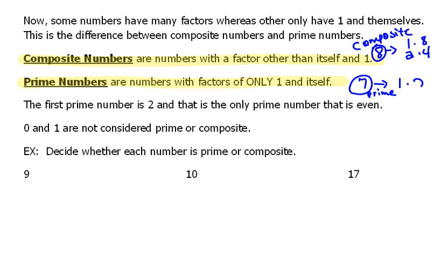Now a couple of little things that we need to pay attention to. Our first prime number is 2 and that is the only prime number that's even. After the number 2, the only primes are odd numbers.